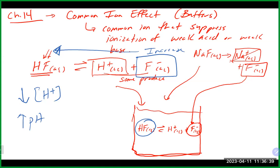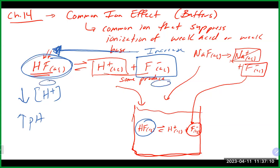So really what these are are buffer-type problems. Buffers are really common ion situations — they have a weak acid and conjugate base, or a weak base and conjugate acid, both in solution together. Because of this Le Chatelier's principle effect, the concentrations in your ICE table at the start and end are relatively the same, meaning you could use an ICE table or the Henderson-Hasselbalch equation.